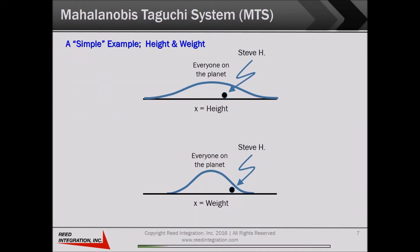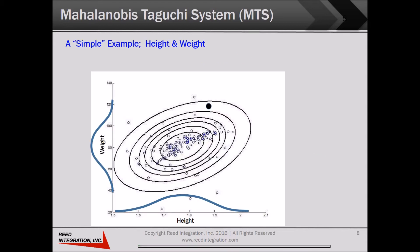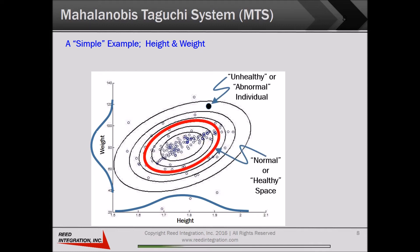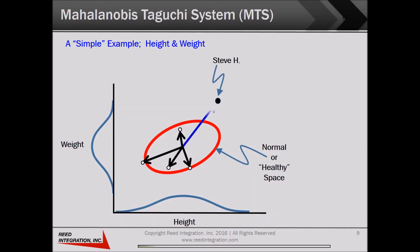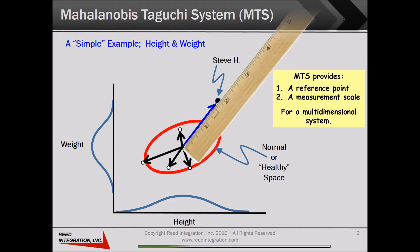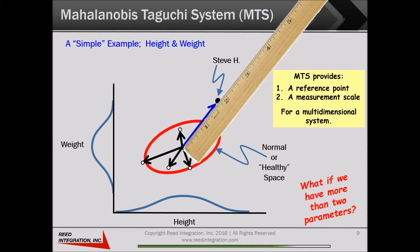So let's use a simple example to learn about MTS — evaluating an individual's height and weight. If the blue bell curves on this slide represent the height and weight of everyone on planet Earth, we could ask if an individual is where they ought to be. Tables of recommended height and weight are readily available from the doctor's office. Data points inside the red oval represent healthy or normal conditions. Each new individual can then be evaluated as healthy or not healthy, using a reference point at the center of the healthy space and a measurement scale defined as the number of healthy space diameters away from the center, with 1.0 or less being healthy. It looks like about 1.75 for me.